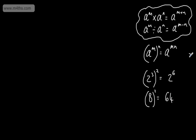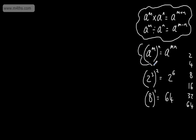As we saw, the powers of 2 go: 2, 4, 8, 16, 32, and 64. We can see 2 to the power of 6 gives us 64. So a to the power of m raised to the power of n equals a to the power of m multiplied by n.